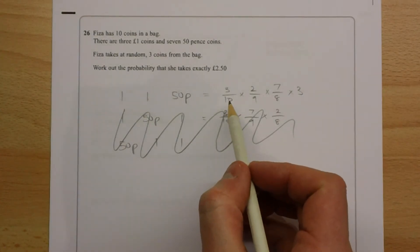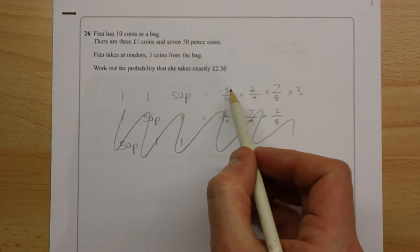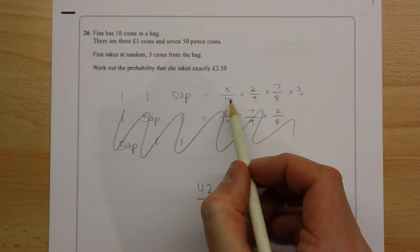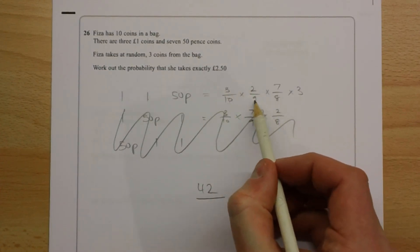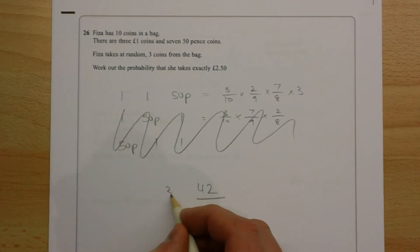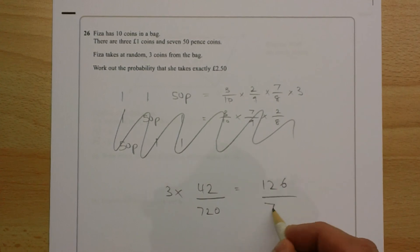So the numerators multiplied together, 3 times 2 times by 7, 6 times by 7 is 42. The denominators, 10 times 9 times 8, 9 times 8 is 72, times 10 is 720. And we've got 3 of that, 3 lots of 42 is 126 over 720.